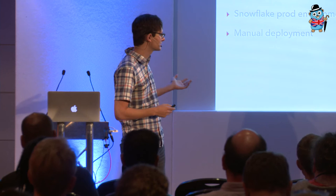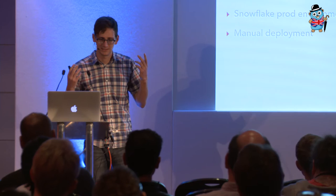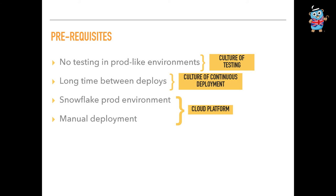To tackle some of these issues, there need to be some prerequisites in place. Once we've achieved these prerequisites, our CI system will be most effective. So let's talk about them briefly. First: no testing in a prod-like environment means you need a culture of testing. If you have a system that automatically deploys your code but you never test whether that code works beforehand, that's not going to be effective. You can deploy bad code all the time. A culture of testing at your company is important.